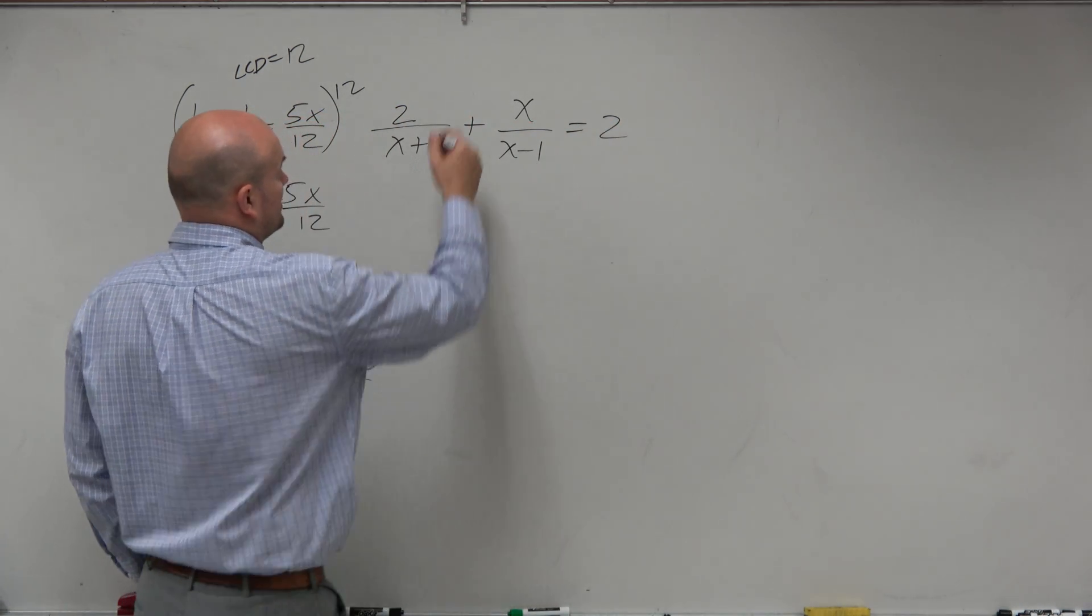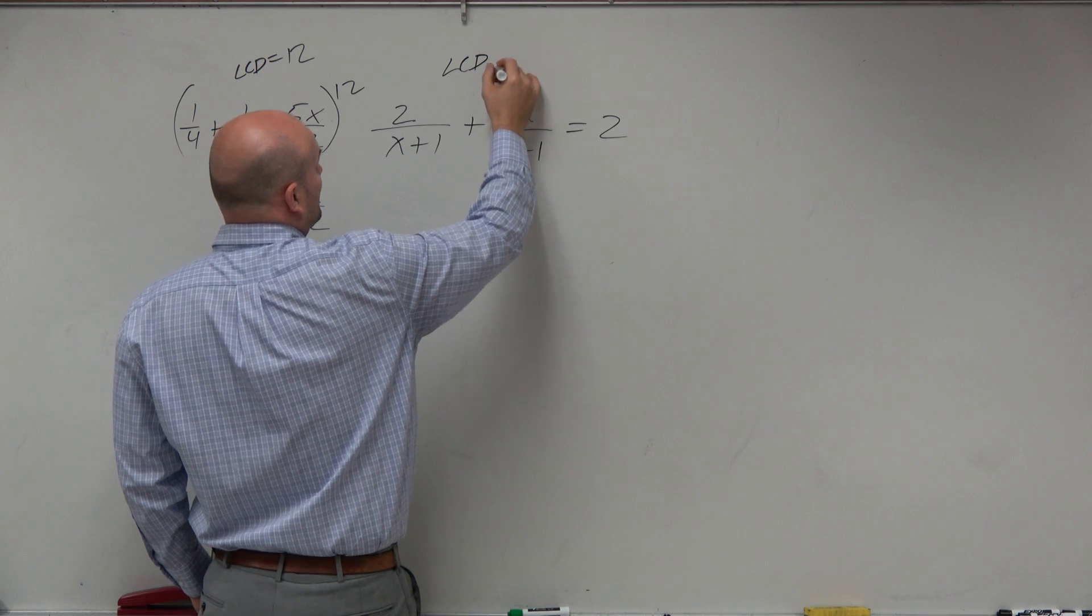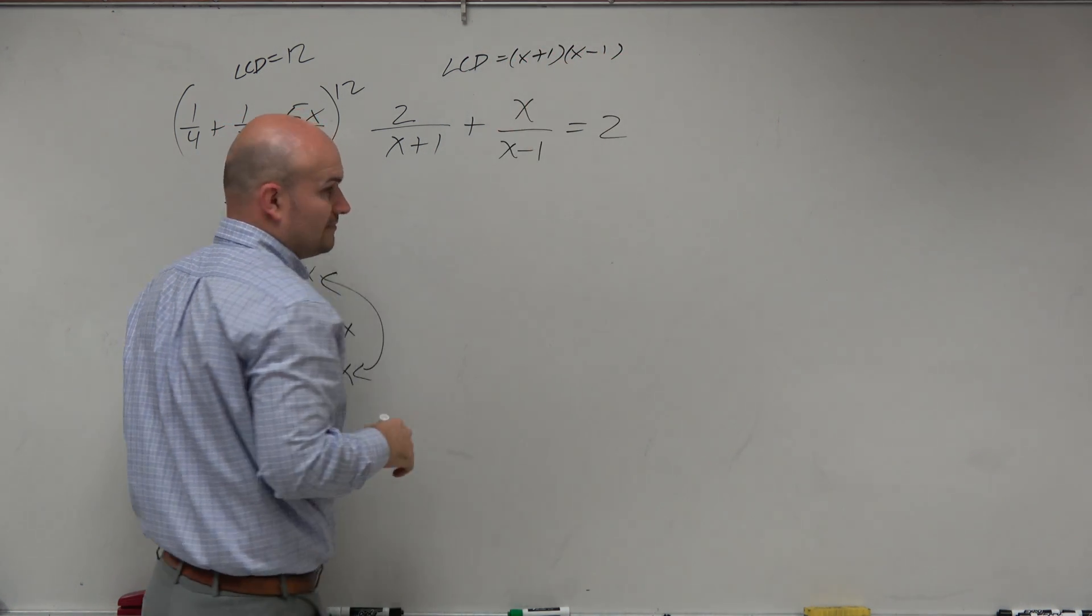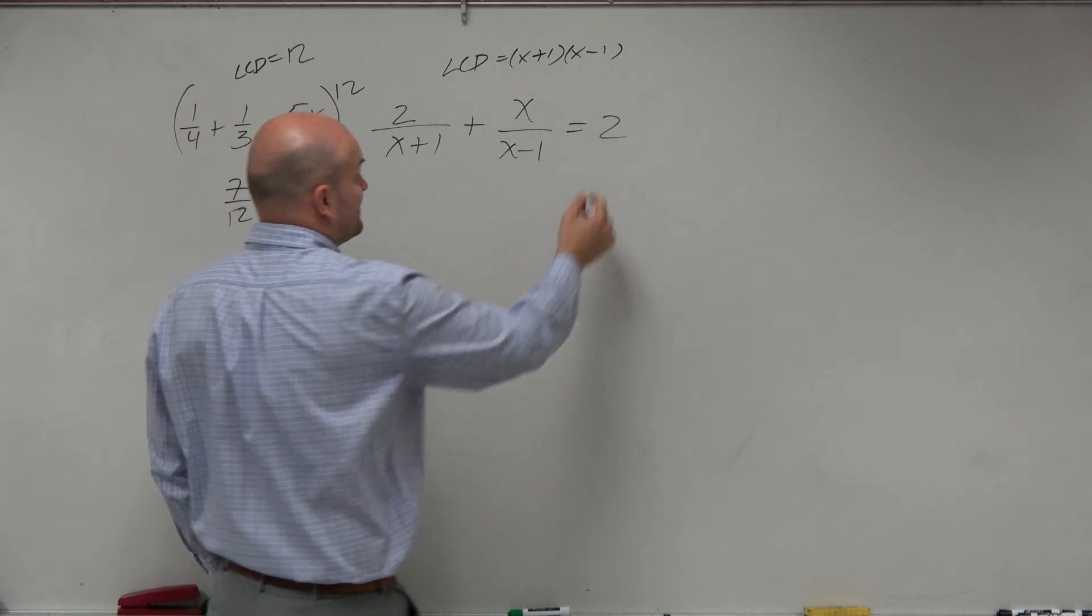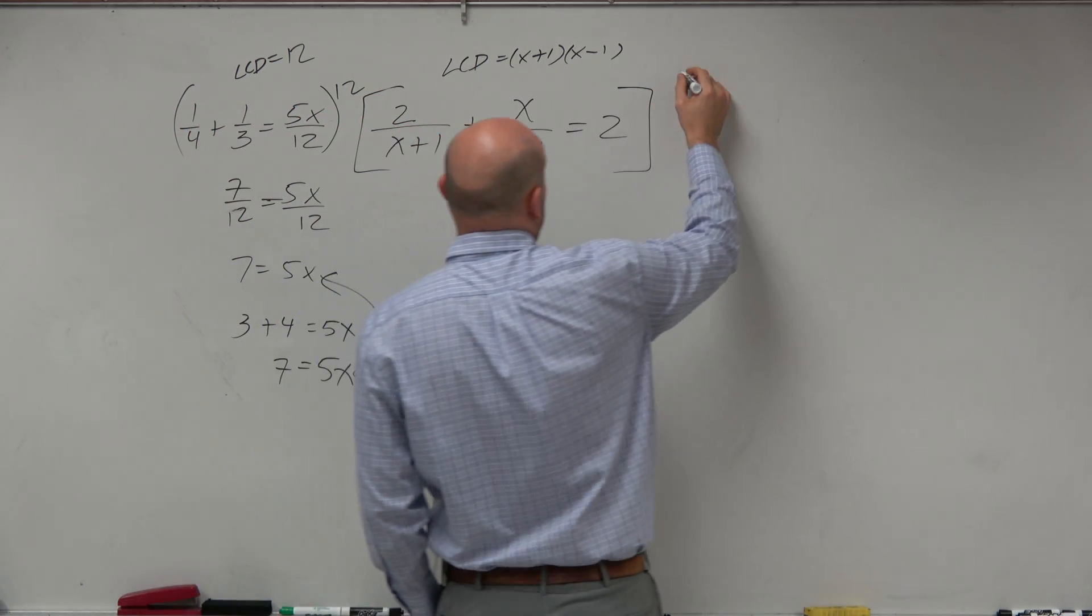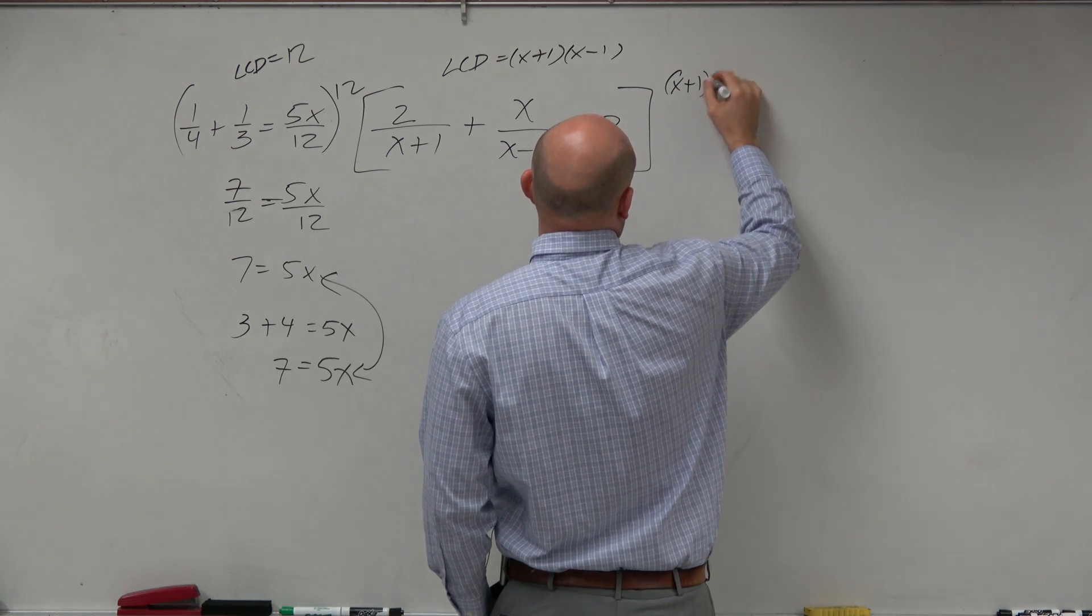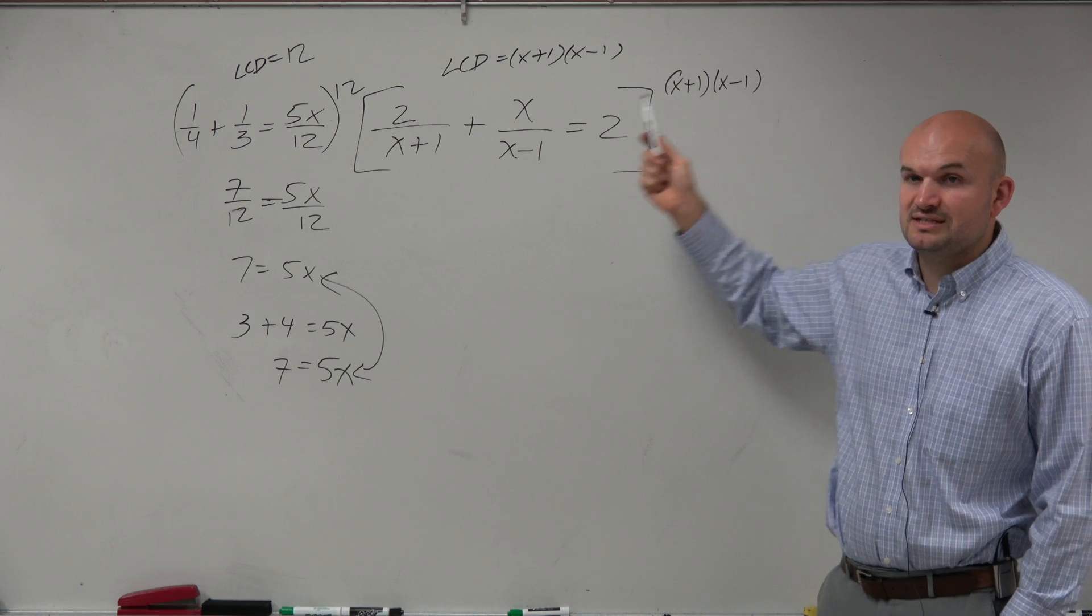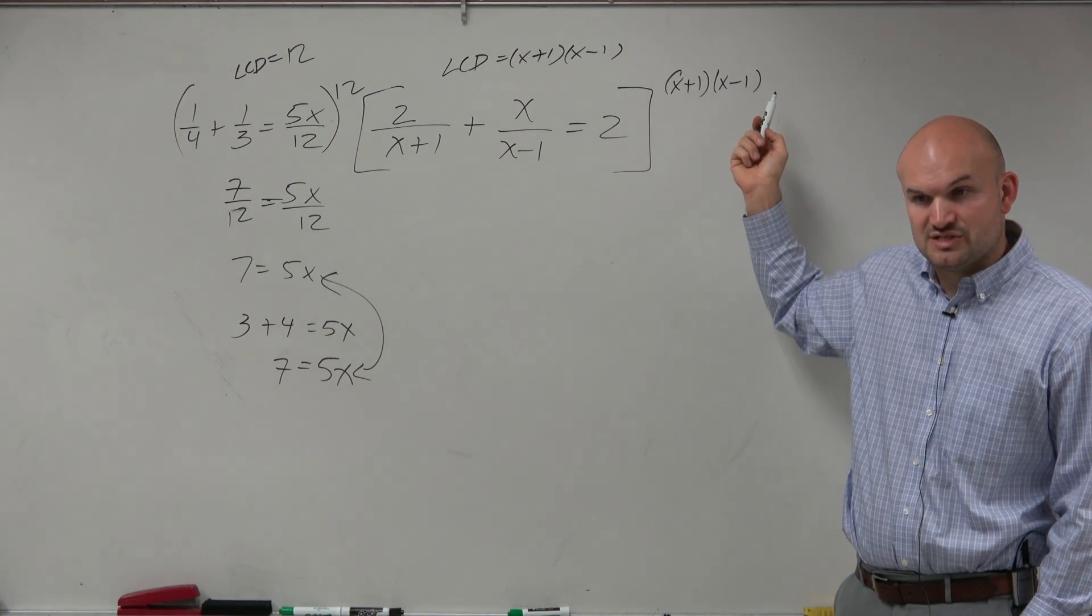Couldn't we just find the LCD here? Now here, the LCD is going to be a simple product of my two denominators, x plus 1 and x minus 1. So if I multiply everything times x plus 1 times x minus 1, notice my denominators are always going to divide into that LCD.